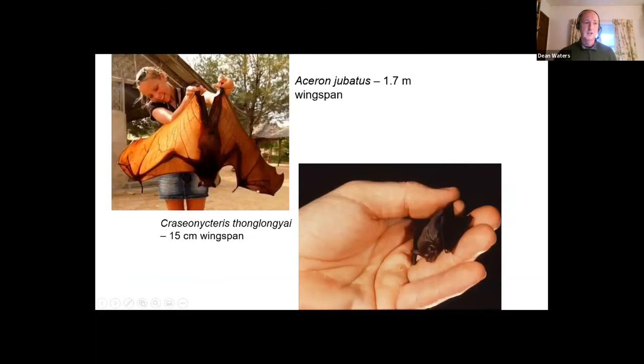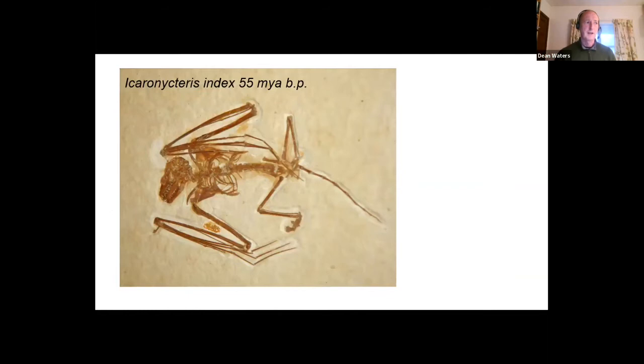Interestingly, this tiniest bat Craseonycteris thonglongyai appears to be more closely related to these large fruit bats than it is to all of the other smaller Microchiroptera. So there's a lot of stuff in terms of the genetics that we need to work out using new techniques to try and understand the evolutionary history of bats as well.